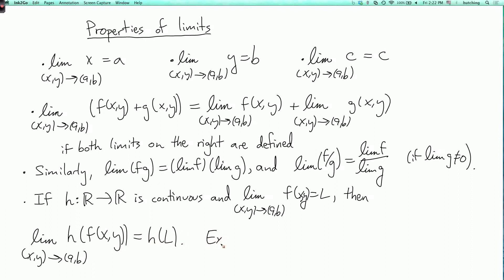So an example would be that the limit as (x,y) goes to (a,b) of e^(x+y) equals e^(a+b). So here we're taking h to be the function e^t, and f(x,y) equals x plus y. So by this sum rule up here and these rules for the limits of the coordinate functions, the limit of x plus y is a plus b, and so then we can just apply h to it. So to get that the limit of h(x+y) is h(a+b).